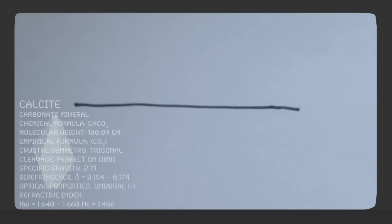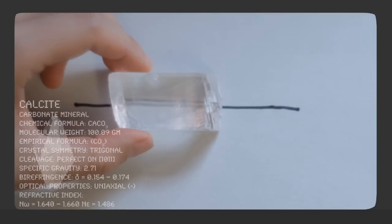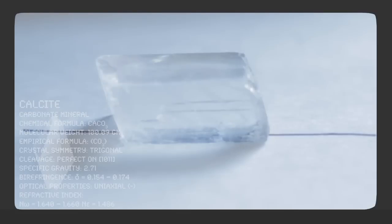When a calcite mineral is placed on top, you can see two lines instead of one. This is because as the light ray, the drawn line, enters calcite, the single ray is split into two.